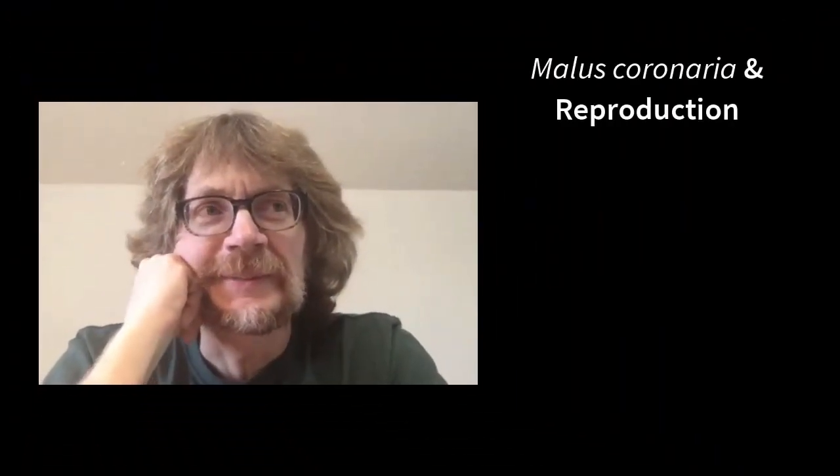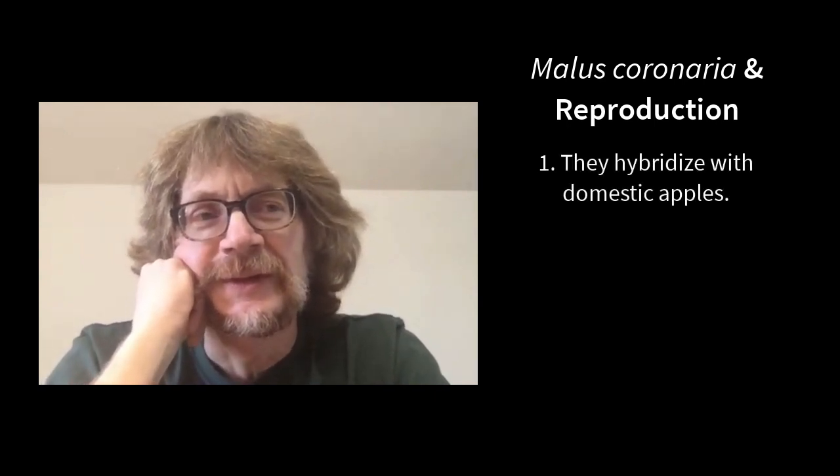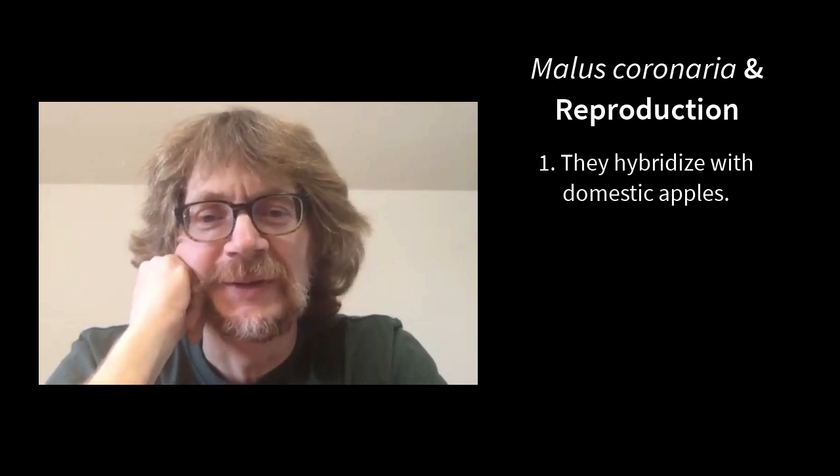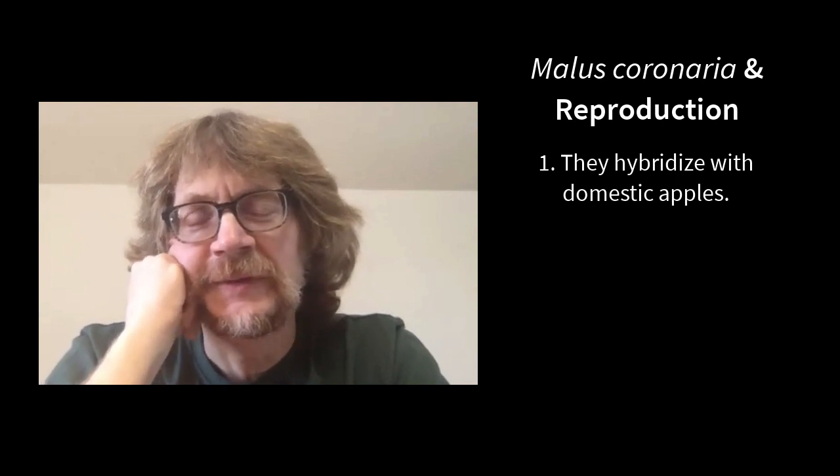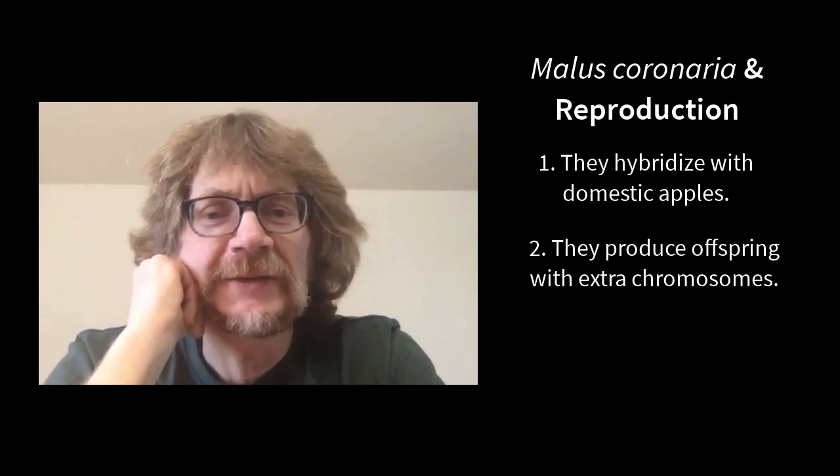You do a lot of research around native apple trees and their reproduction. What's the big mystery you encountered? The native crab apples produce a lot of different types of seed. In diploid plants, they get a copy of each gene from their mother and a copy from their father. The crab apples get two copies from each parent if they're reproducing sexually. But there are three processes that create a dazzling array of outcomes. One is that they hybridize with domestic apples, and most commonly those hybrids are triploids. The other thing is they often produce eggs and sperm cells with extra sets of chromosomes.